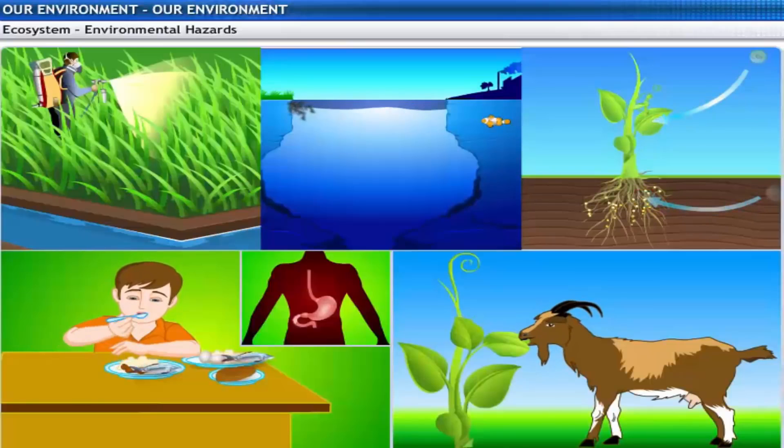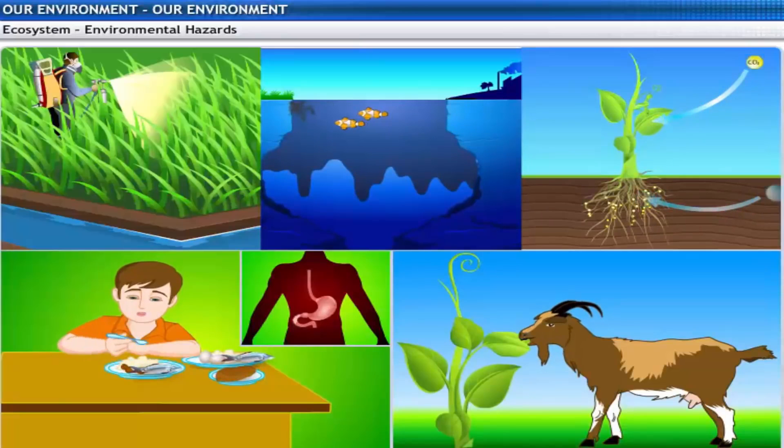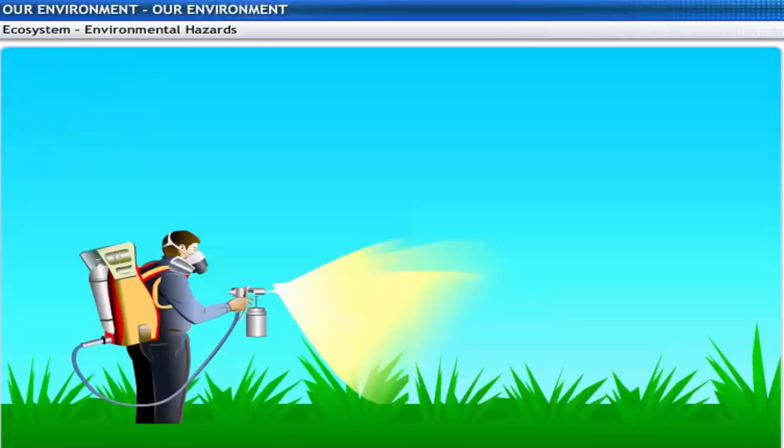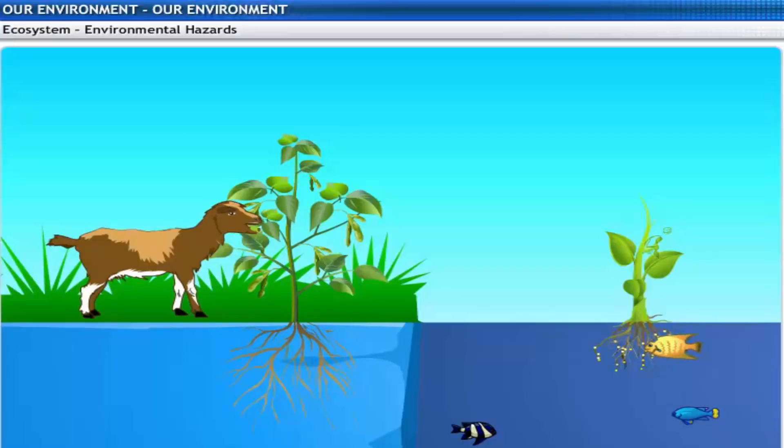Did you know that unknowingly harmful chemicals can enter your body through the food chain? One of the reasons is the use of several pesticides and other chemicals to protect crops from diseases and pests. These chemicals are either washed down into the soil or into water bodies. These are absorbed from the soil by the plants along with water and minerals, and these are taken up by aquatic plants and animals from water bodies. This is one of the ways in which they enter the food chain.